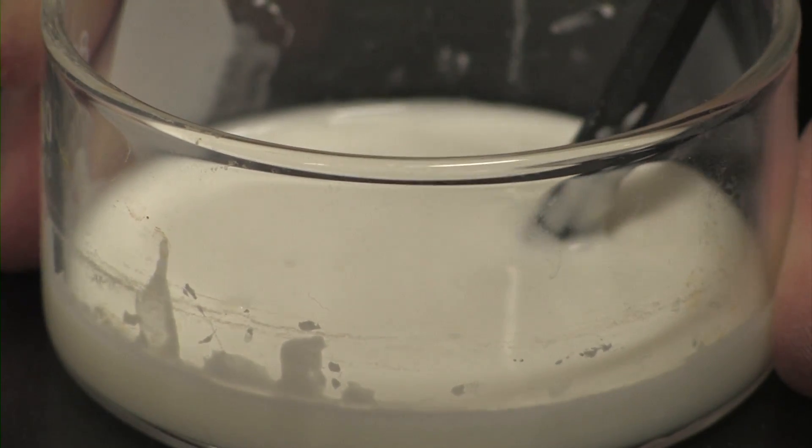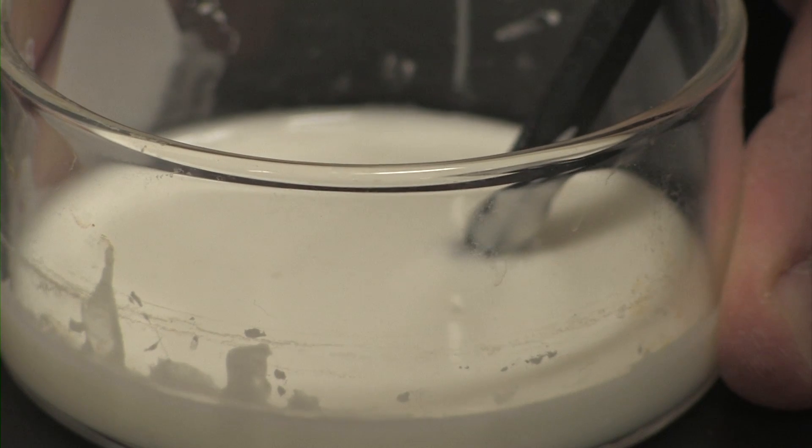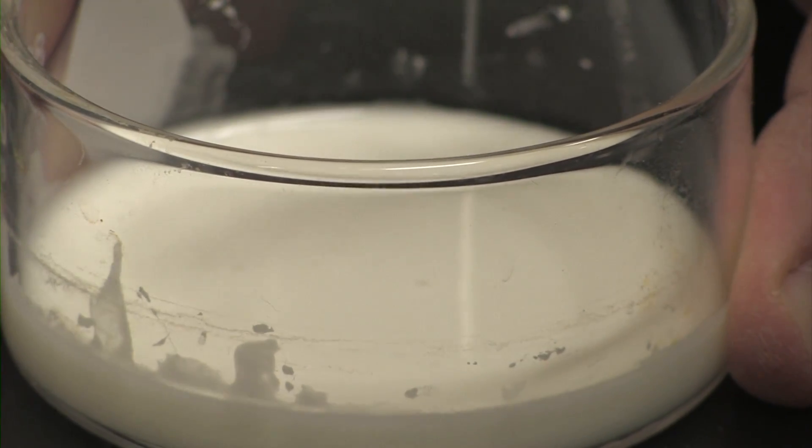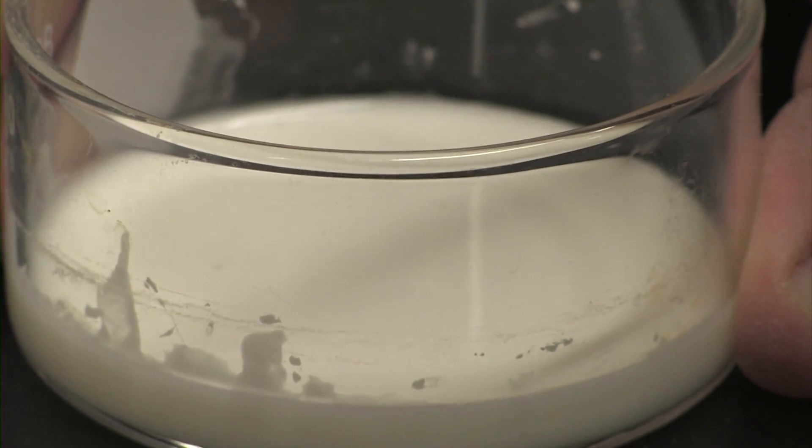We've poured some mixture of cornstarch and water into a petri dish. And as you can see, if you stir the mixture slowly, gently, it flows like a liquid. It drips.